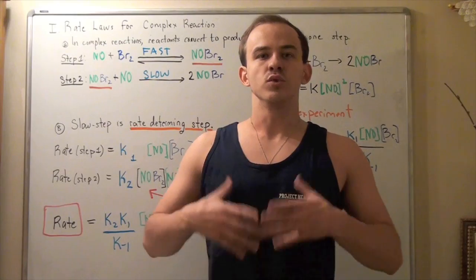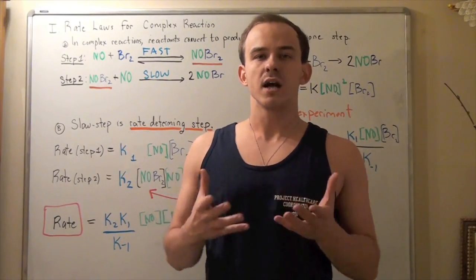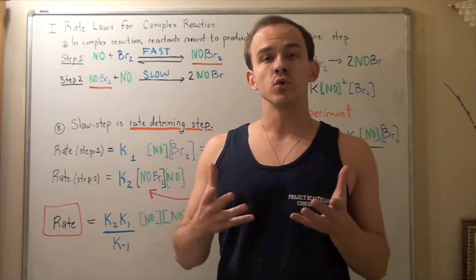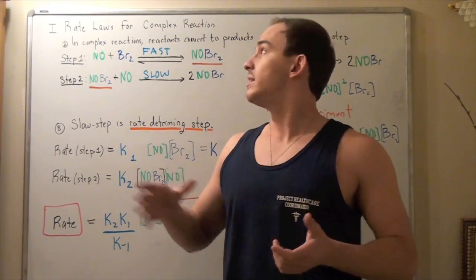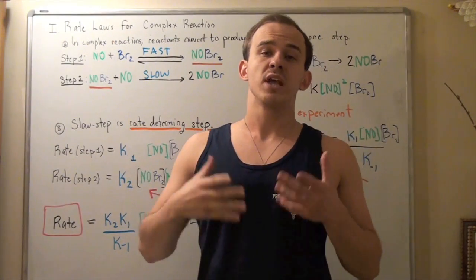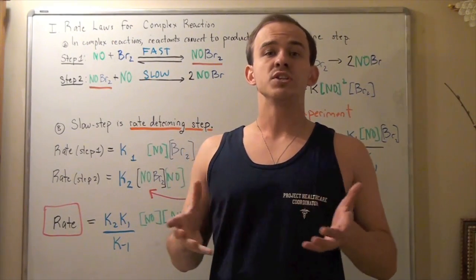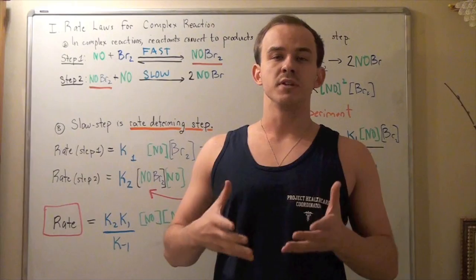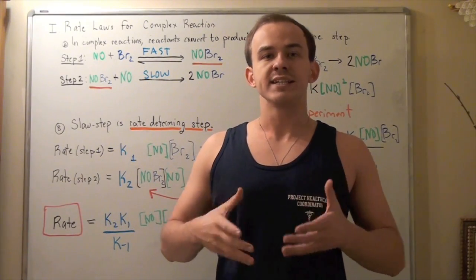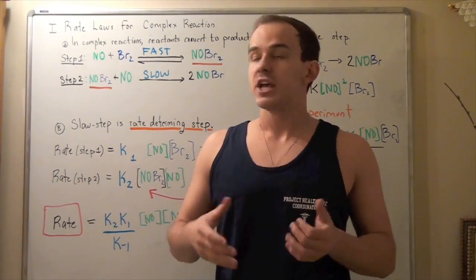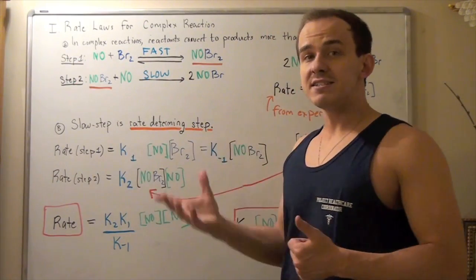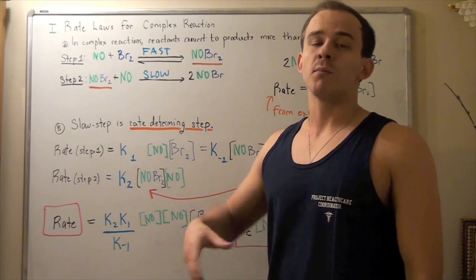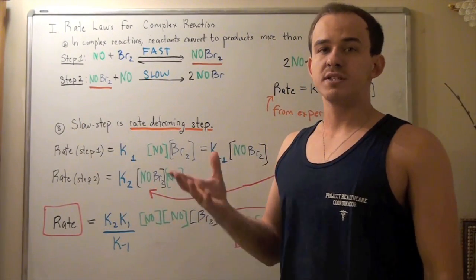In the previous lecture, we began our discussion on complex reactions, and I showed you how to obtain the rate law for a complex reaction in which the first step was the slow step, or the rate-determining step. Now we're going to look at complex reactions in which the first step is the fast step and the second step is the slow step, or the rate-determining step.